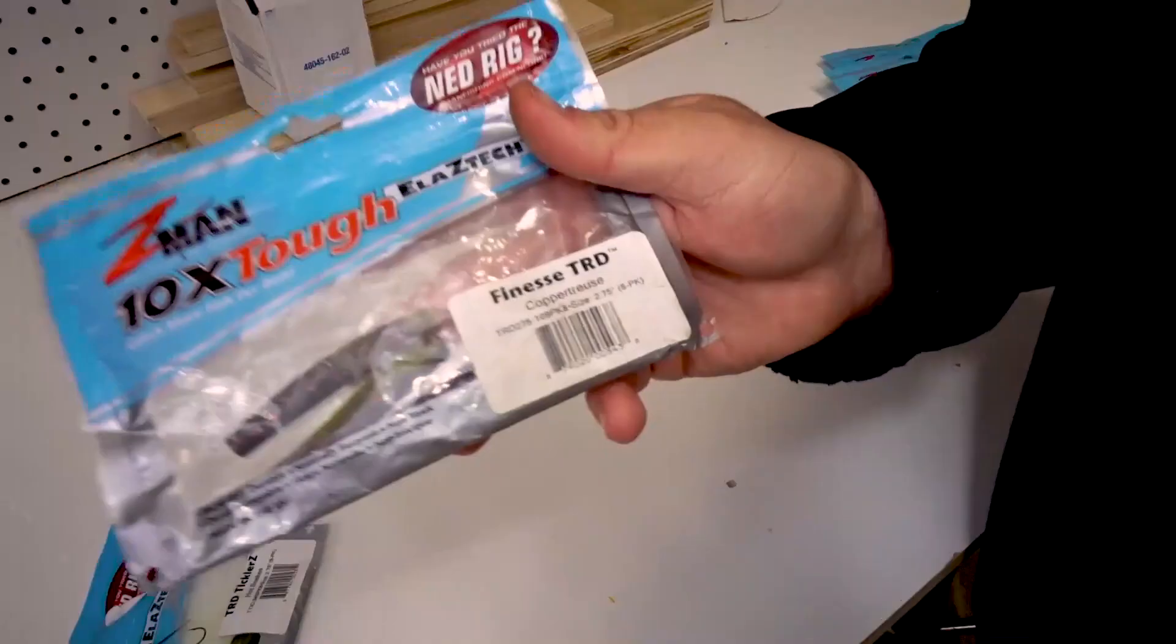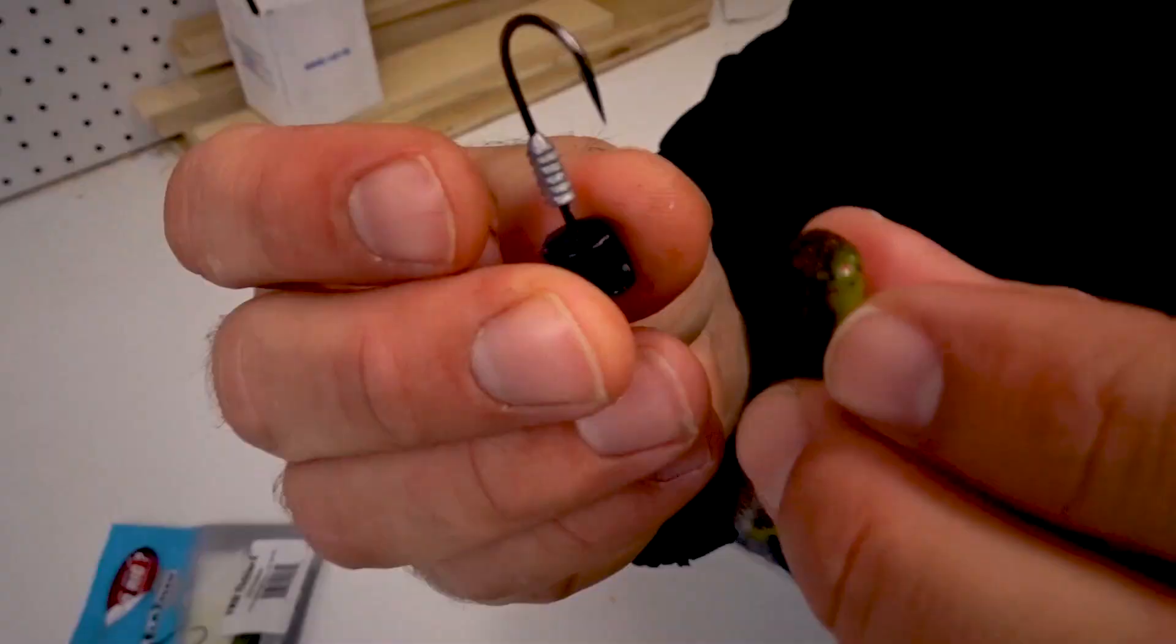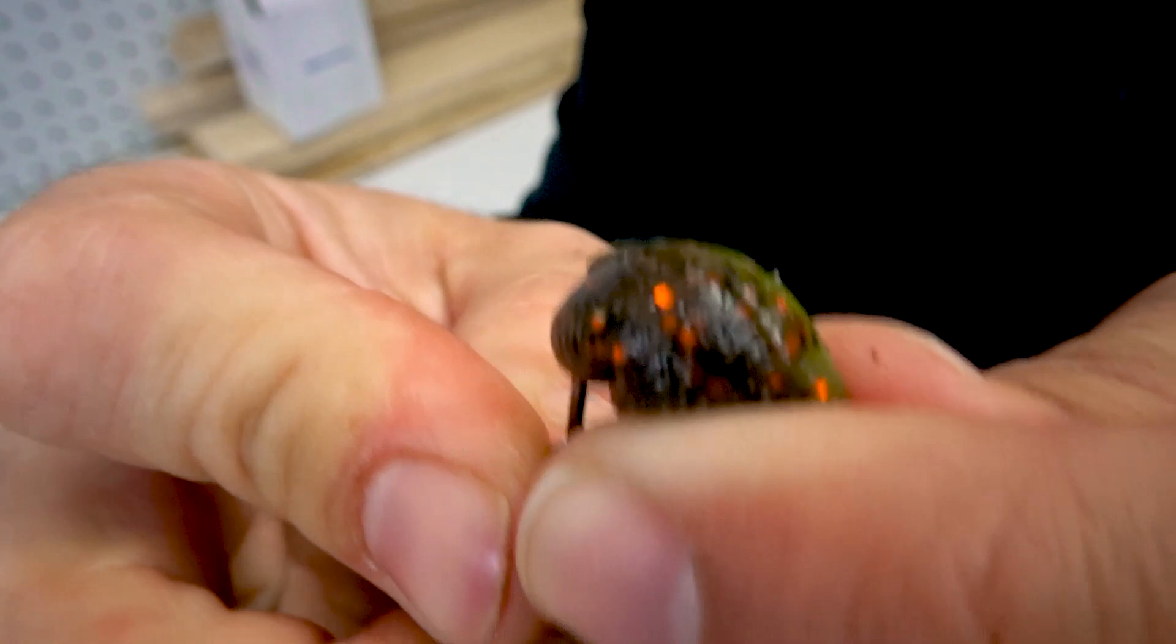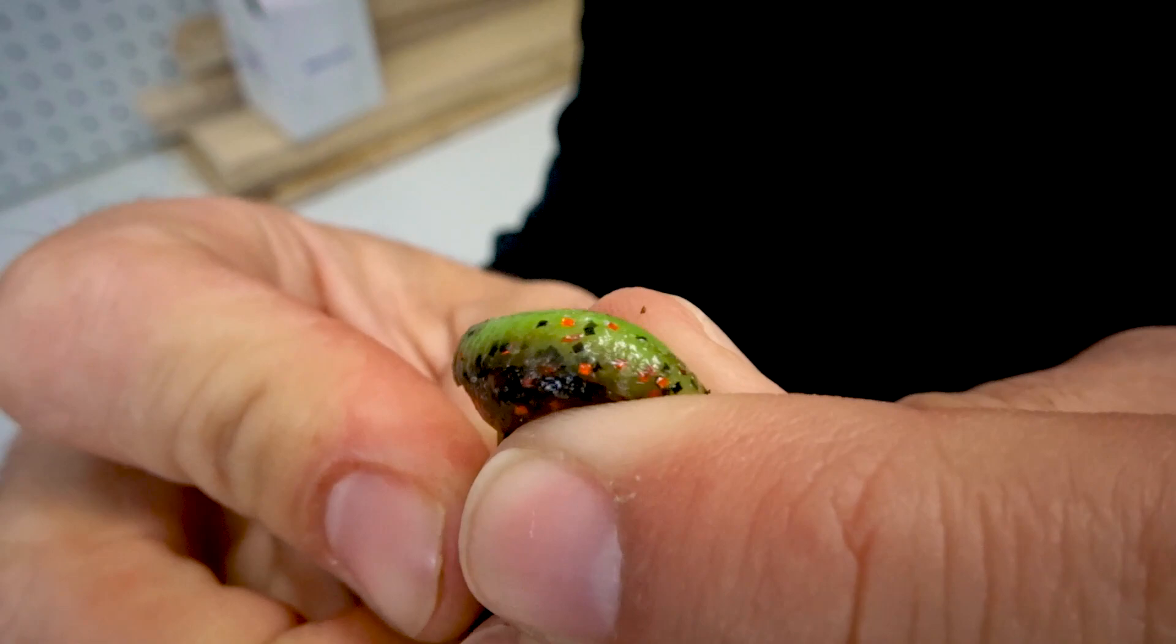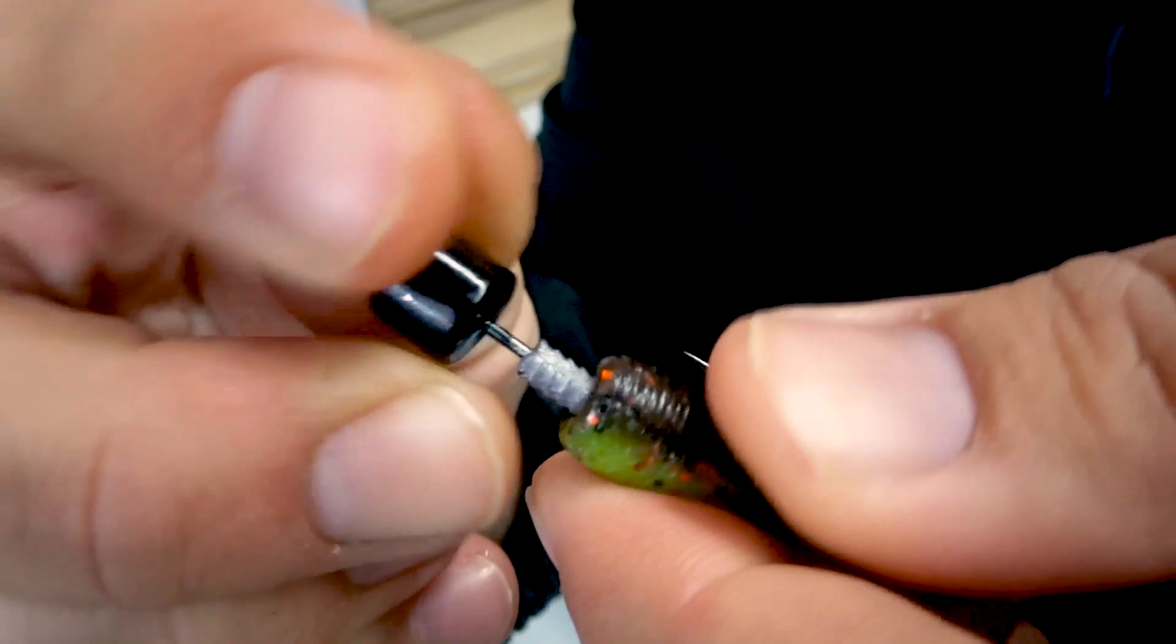Moving on to number four, another finesse TRD but with a Ned lock Z HD jig head. Setting this up is just like the TRD crawl Z, but maybe you can actually see a little bit better on this one. See, I'm slowly taking it up, trying to keep the bait facing the right way. Once I get it through, I pop that hook right through.